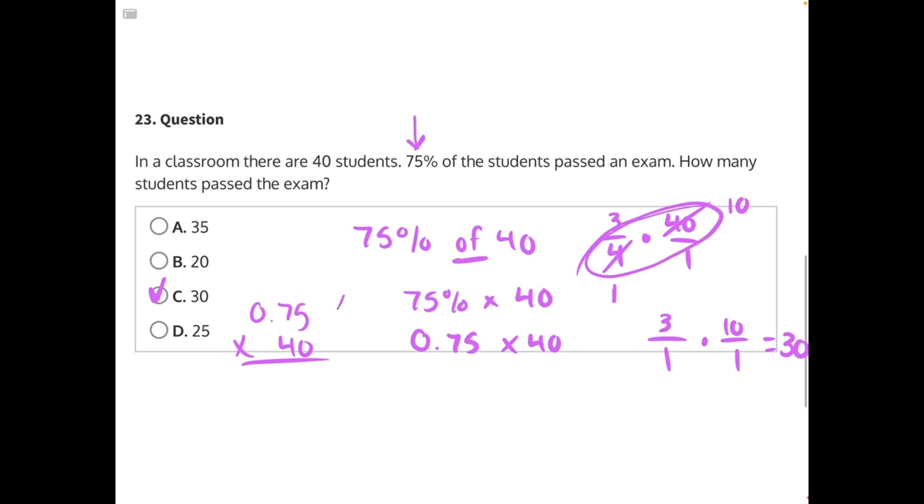If you chose the first option, you would have also gotten 30. 0 times 5 is 0. 0 times 7 is 0. 0 times 0 is 0. Put placeholder. 4 times 5 is 20. 4 times 7 is 28. Plus 2 is 30.